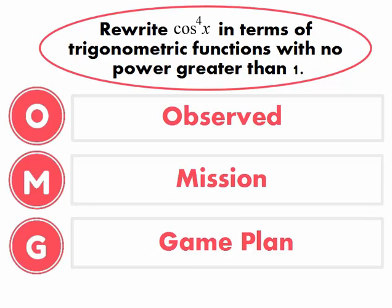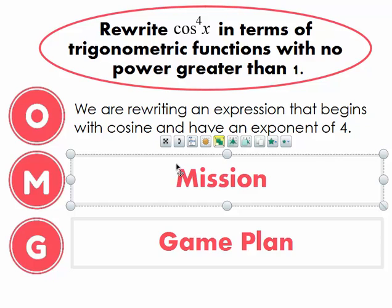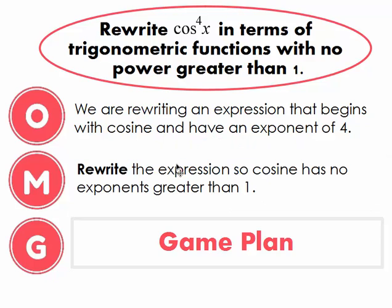The problem we're given says: rewrite cosine to the fourth x in terms of trigonometric functions with no power greater than one. The first thing we observe — pretty much the only thing to observe for this problem — is that we're given cosine and that it has an exponent of four. Our mission is to take that expression cosine to the fourth x and rewrite it so cosine has no exponents greater than one.